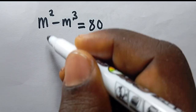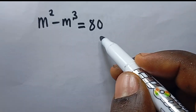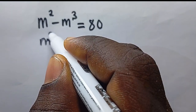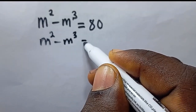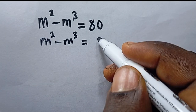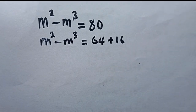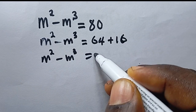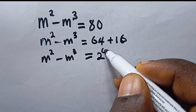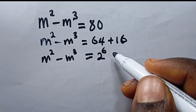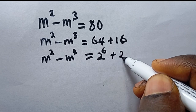Diving into the problem: m² minus m³ is equal to 18. So this is m² minus m³, and I can write 18 as 64 plus 16. I'll write 64 as 2 to the power 6, and 16 as 2 to the power 4.